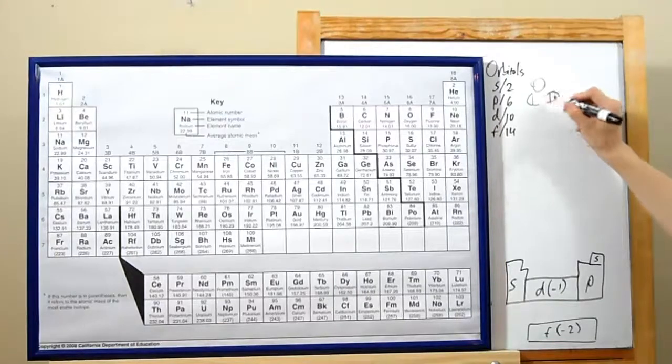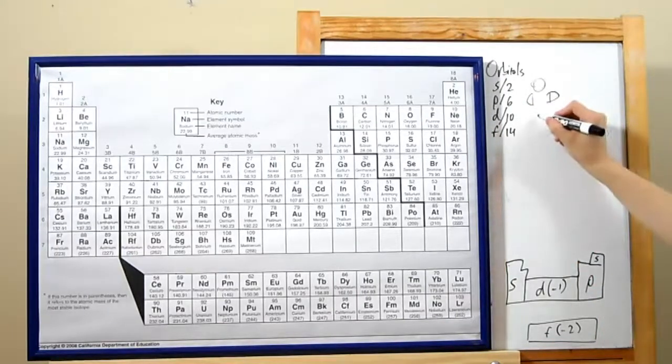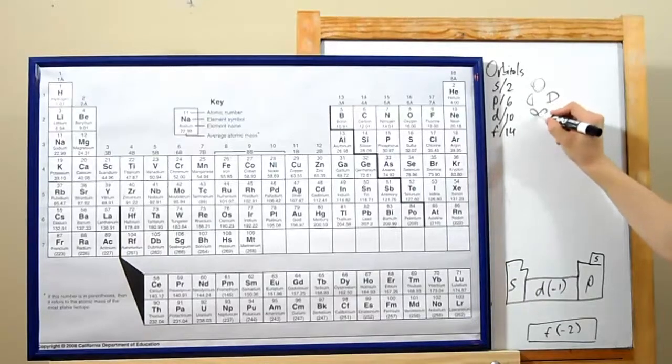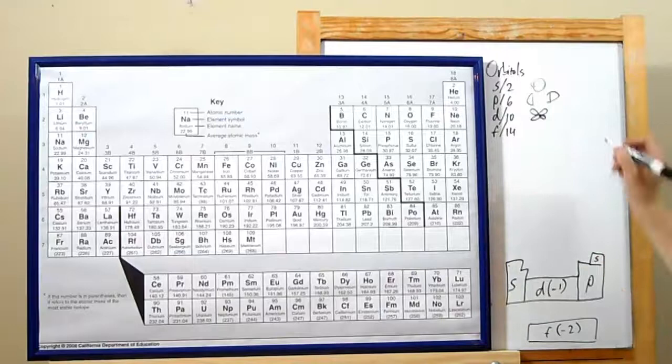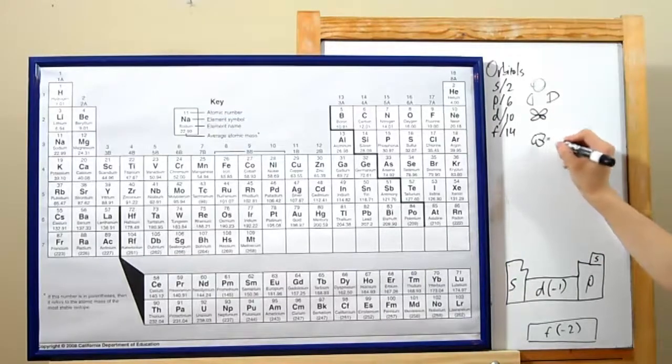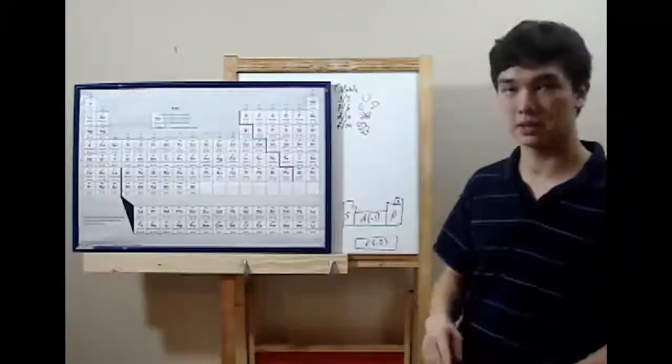Next are p-orbitals. These are shaped kind of like dumbbells and can hold at most six electrons. D-orbitals, which I say are kind of flower-shaped, they've got four petals. These hold at most ten electrons. And last, f-orbitals, which have a variety of very odd shapes, hold at most fourteen electrons.